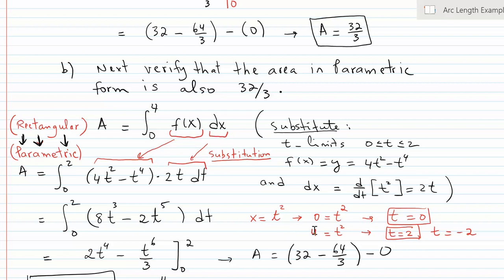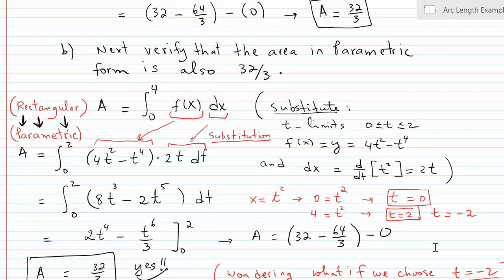Down here I'm showing how to figure out the limits for t. Since I know the limits for x are 0 and 4, I substitute those into x = t², and I get 0 for the lower bound and plus or minus 2 for the upper bound. I'm using positive 2 in this case — if you graph it from 0 to 2 you'll get that parabola. I'll let you discover what happens if you graph from negative 2 to 0.